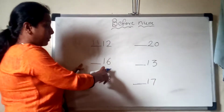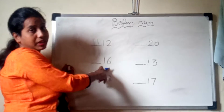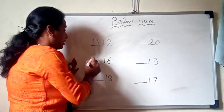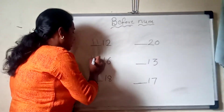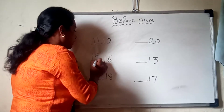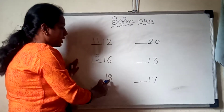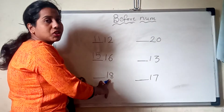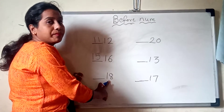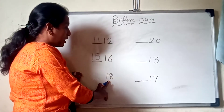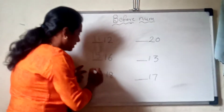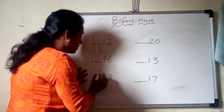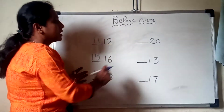Now next, 16, 14 — before which number will come? 15. Before 18, which number will come? 17. Yes, 17.